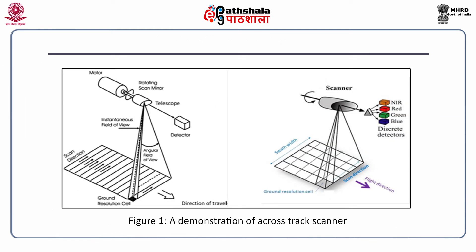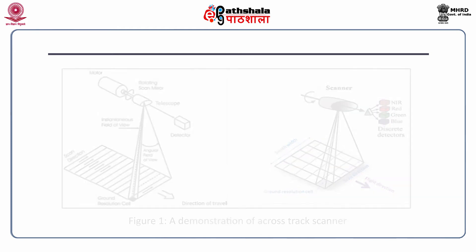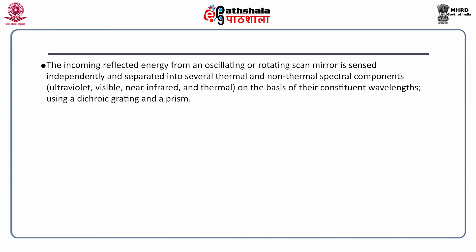As seen in the figure of a cross-track scanner, the satellite has rotating scan mirrors and the area swept on the ground falls under the angular field of view. At any instant of time, the area covered by the satellite is called the instantaneous field of view. The ground resolution cell is the pixel — that is, the picture element — the smallest unit of the image covered in a scan. The incoming reflected energy from an oscillating or rotating scan mirror is sensed independently and separated into several thermal and non-thermal spectral components — ultraviolet, visible, near infrared, and thermal — on the basis of their constituent wavelengths using a dichroic grating and a prism.